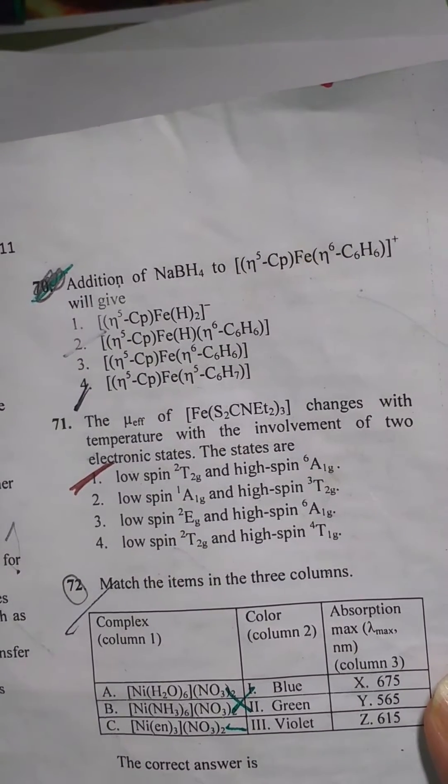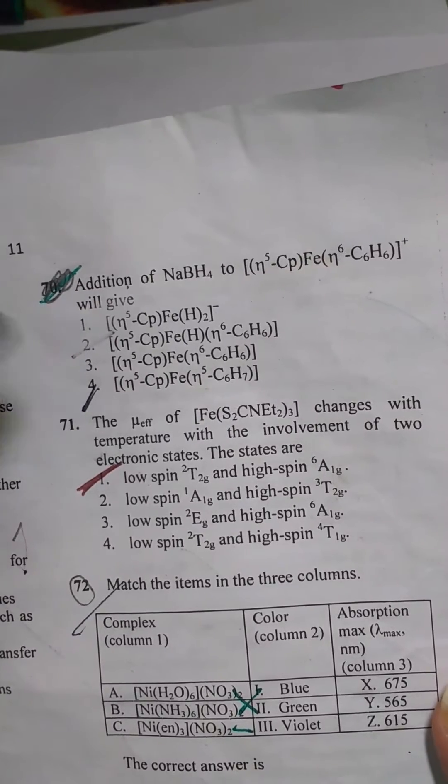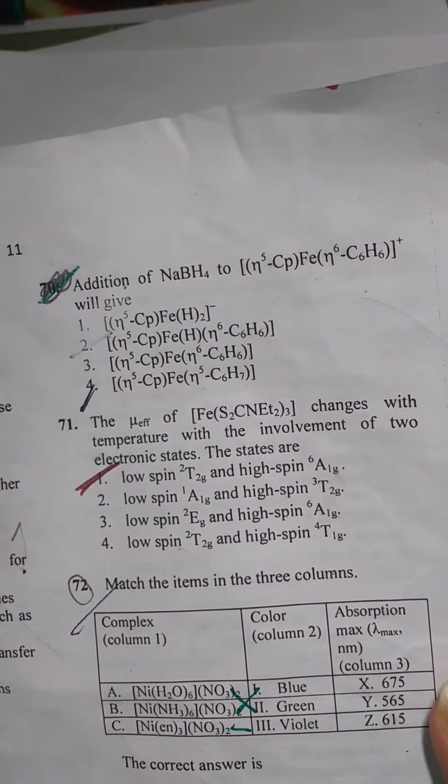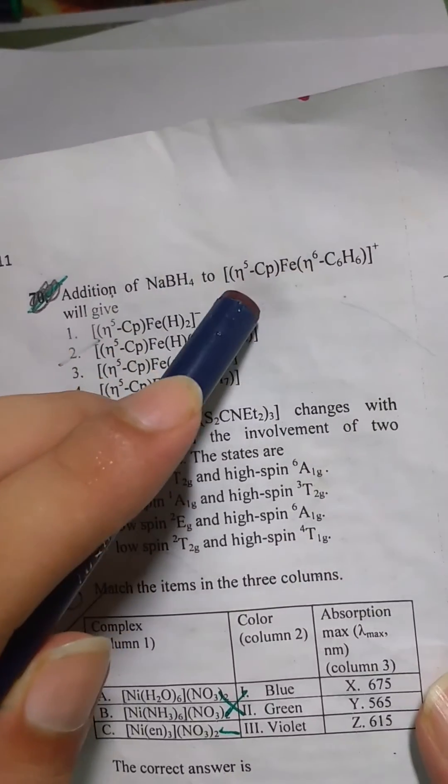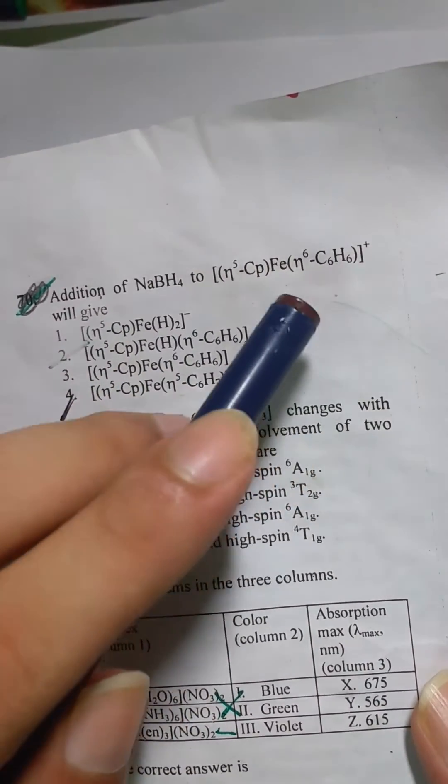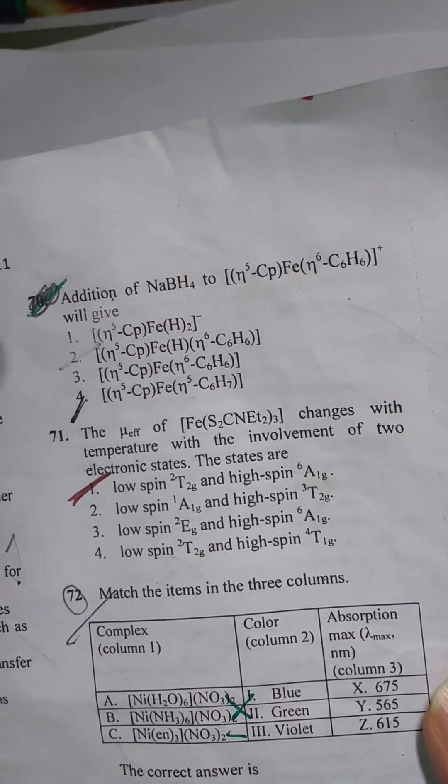Now there has been a lot of doubts and confusion among students related to this question. The question is addition of NaBH4 to this complex, this sandwich complex where there is one cyclopentadiene and one benzene and iron over here will give.